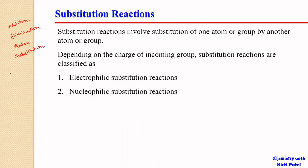In a substitution reaction, it is an exchange of groups where X is getting exchanged by Y. Y is substituting X, or X is getting substituted by Y. Depending on the charge on Y, we can classify substitution reactions into two types: one is an electrophilic substitution and another is a nucleophilic substitution.